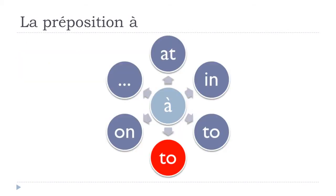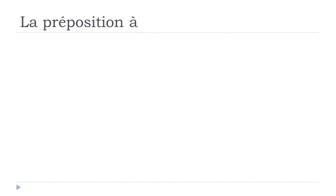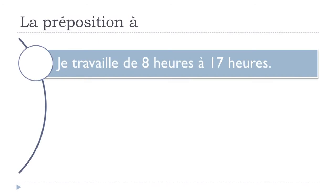Now let's see the second use of 'to' — when it's combined with the preposition DE (meaning 'from'). You put DE, then something, then À for 'to'. For example: 'je travaille de 8 heures à 17 heures' — from 8 to 17 hours. This is the classic 'from...to' structure when introducing times.